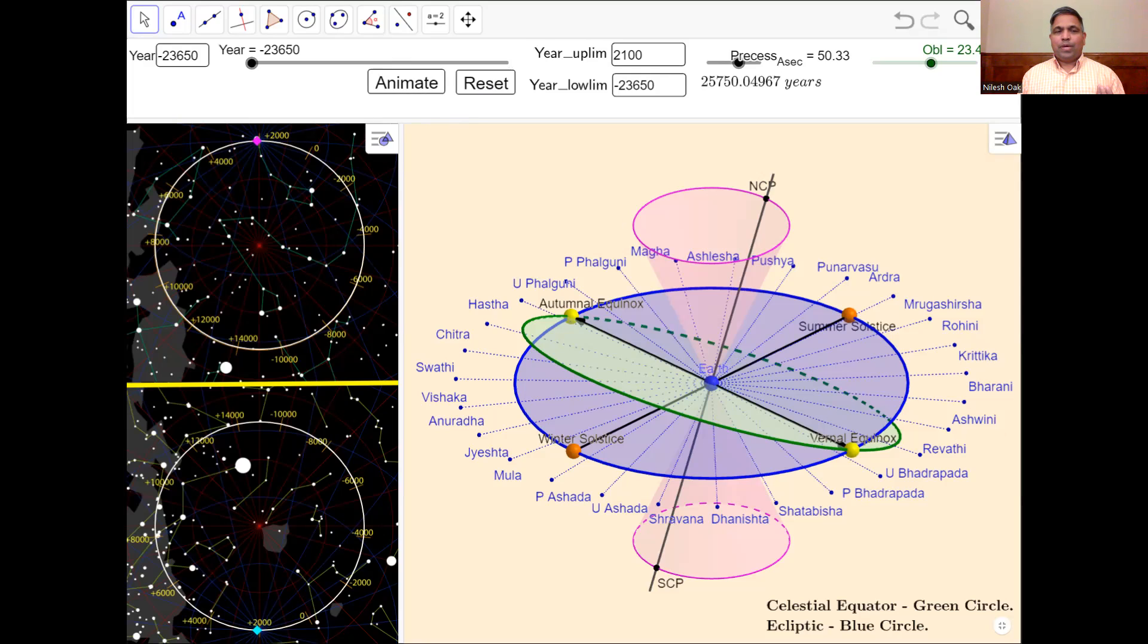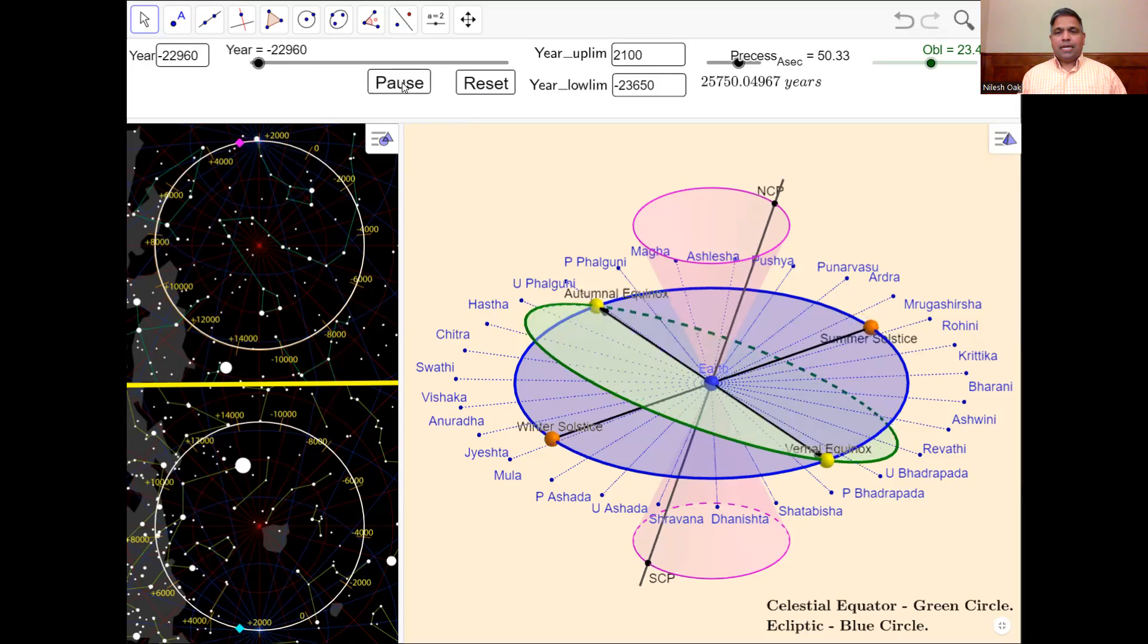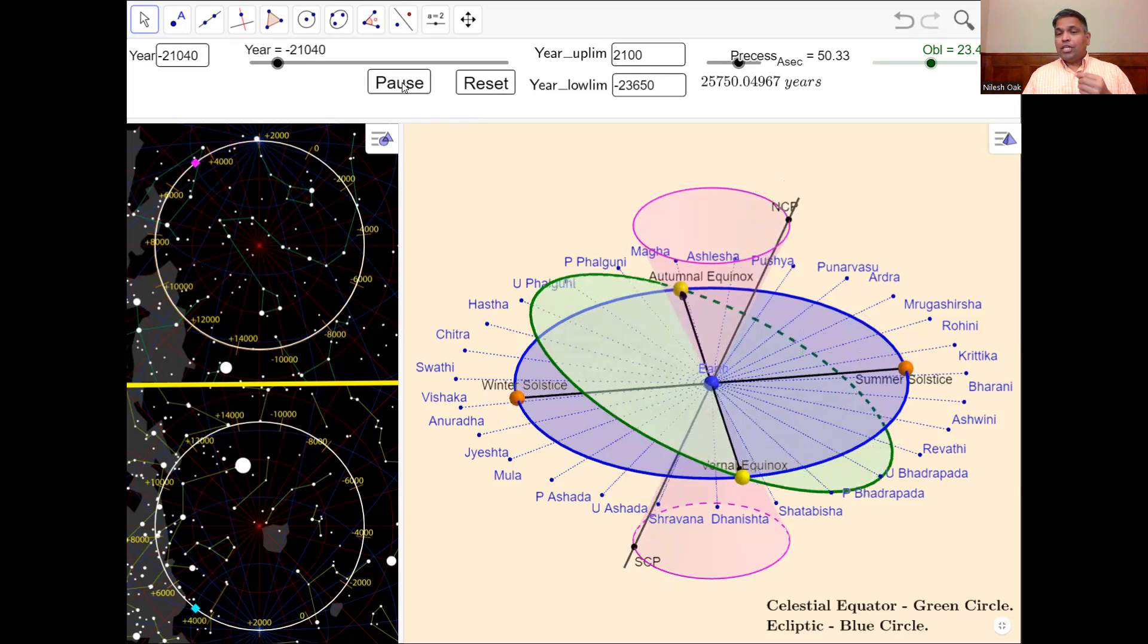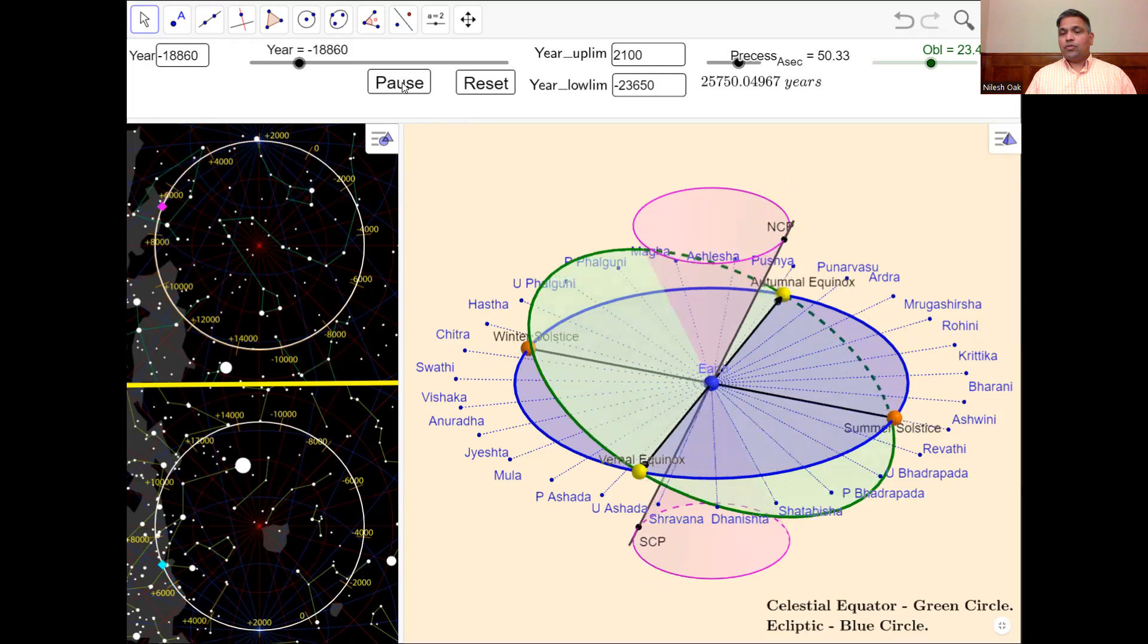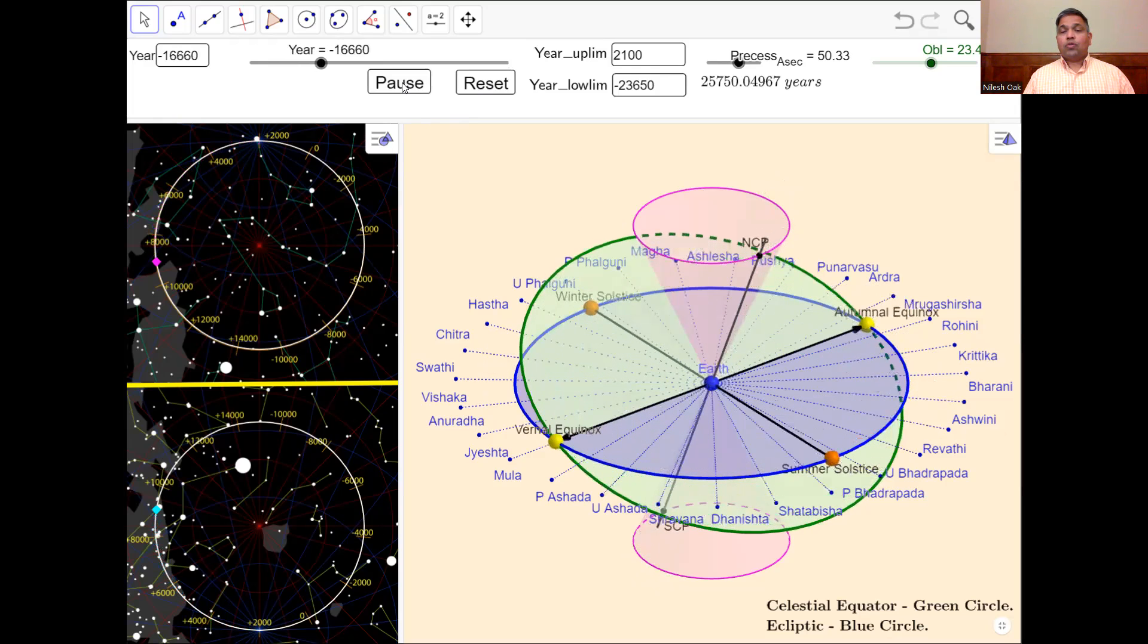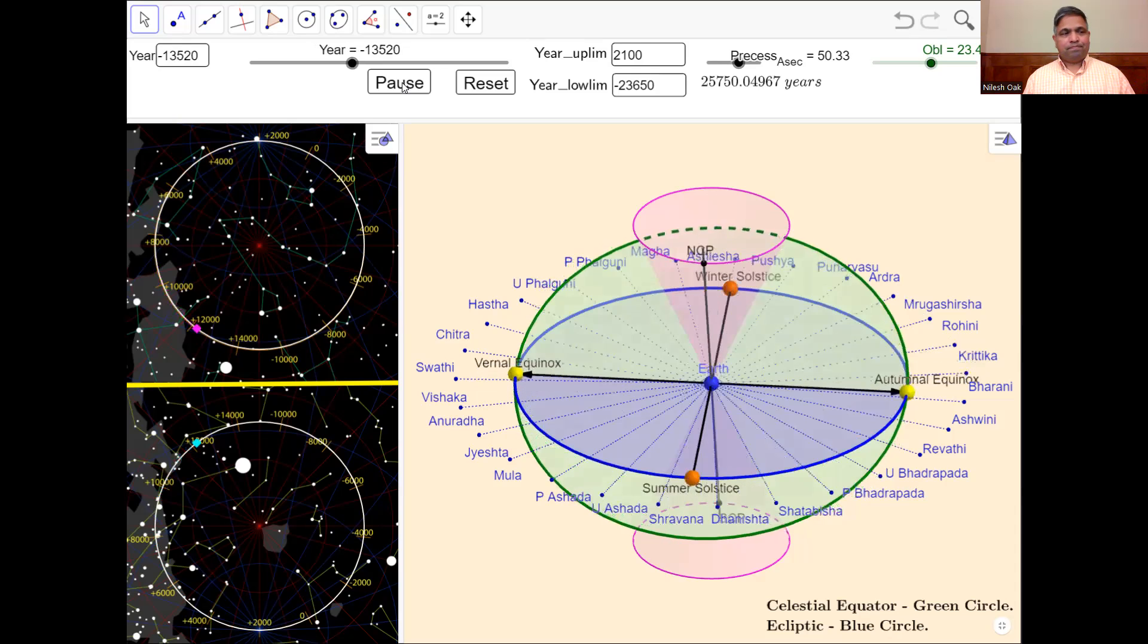Notice how the NCP and SCP, they change, and therefore if there is a bright star next to them, that star will be considered the pole star. All right, let's do that. And also notice the change of nakshatra for the points of equinoxes and also for the points of solstices.